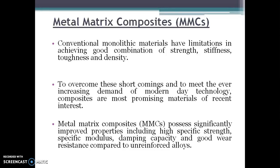The basic advantage of using the hybrid metal matrix composite is we can improve the mechanical properties as well as other different properties by using hybrid reinforcement. The difference between hybrid and composite is that in a composite we use only one reinforcement, whereas in a hybrid metal matrix composite we use two or more reinforcements.